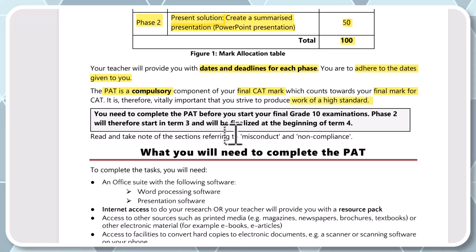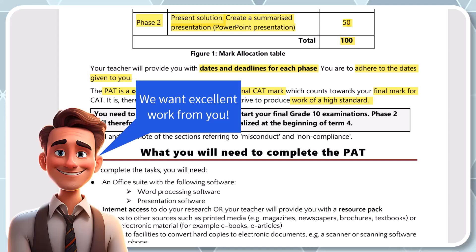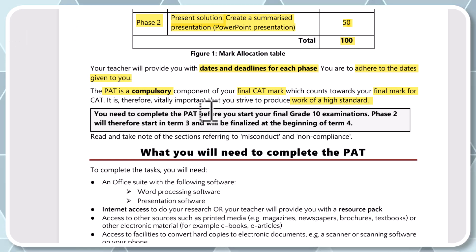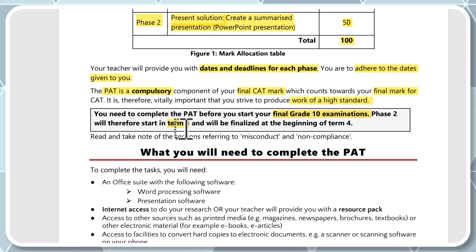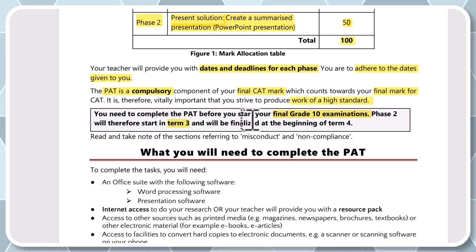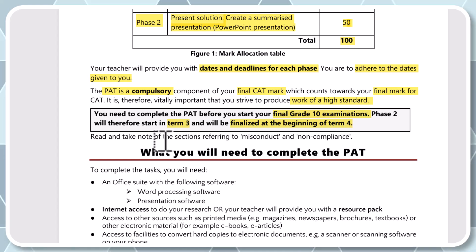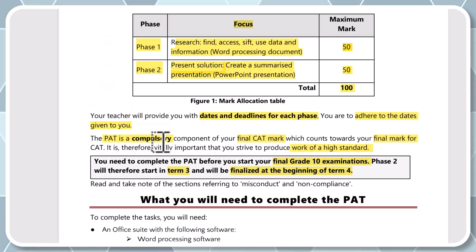You need to strive to produce work of a high standard — this is going to boost your marks, so the better the quality and the better you understand this, the better your marks will be. You need to complete the PAT before your final Grade 10 examinations. Phase 2 starts in Term 3. You'll start the PAT in Term 3, finish it in Term 4, and the PAT will be finalized at the beginning of Term 4.